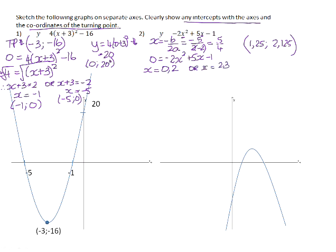The y-intercept is the easiest point to read off of this equation because it is the c-value. So we can see straight away that the y-intercept is going to be at -1. So the points that we plot are (1.25, 2.125) for the turning point.